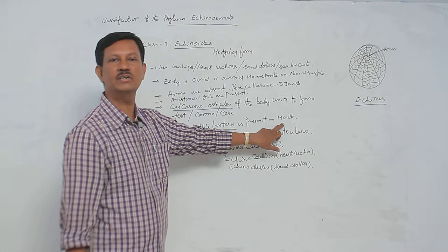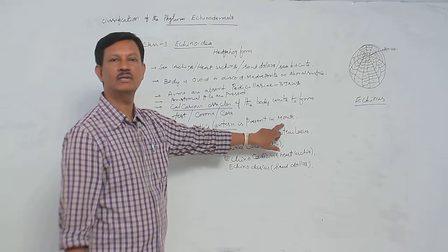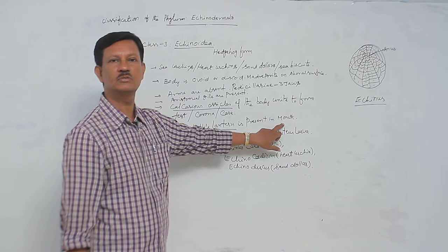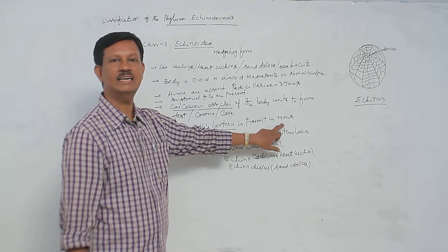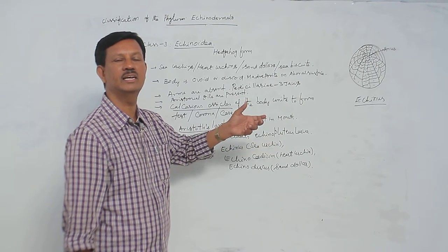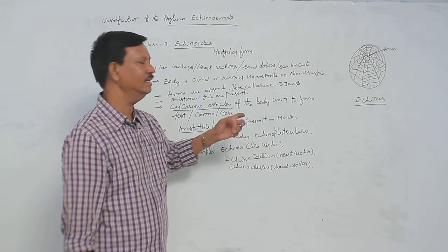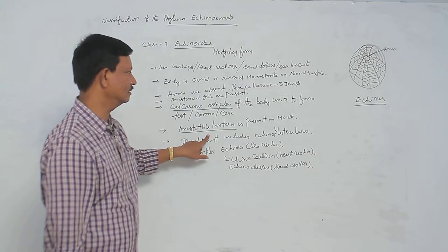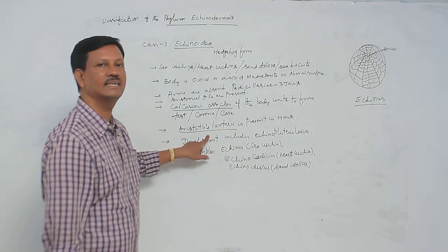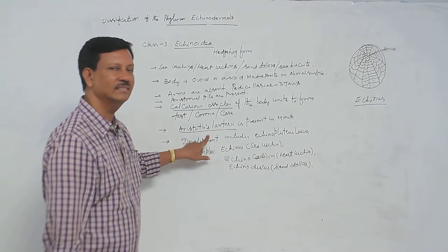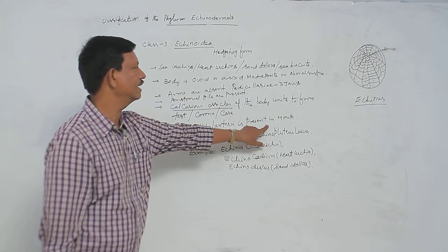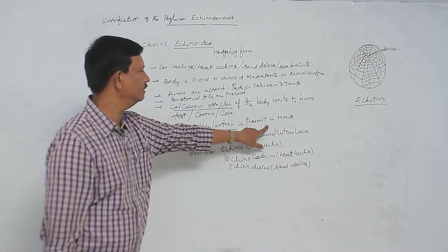Their main function is to break down large food particles into small particles. It indirectly helps in chewing the food material. Churning the food material - that is Aristotle's lantern. This teeth-like structure is present in the mouth region and helps in chewing the food material.